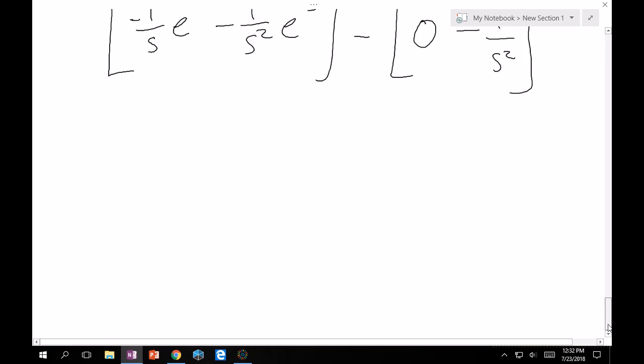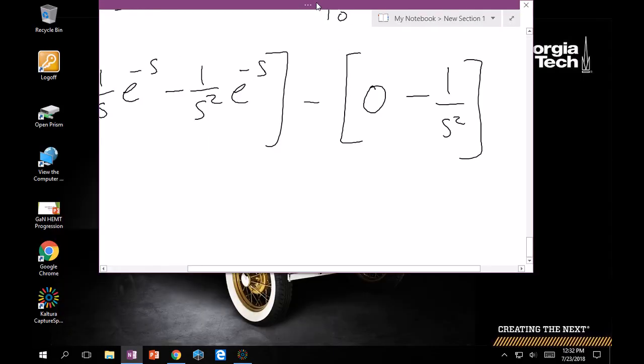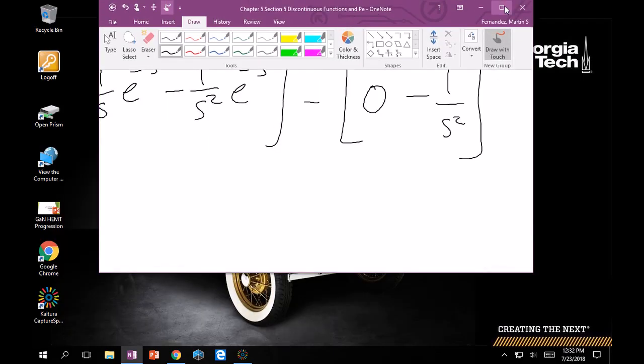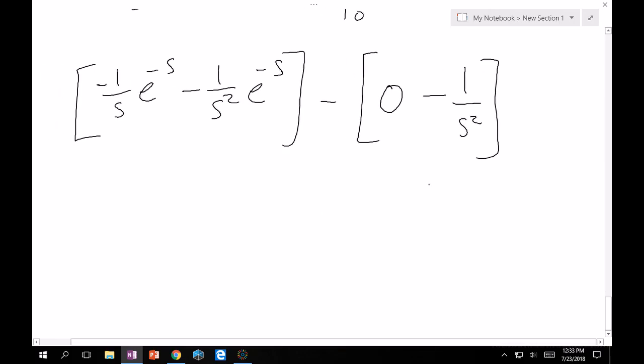Which then means that we, if you simplify this a little bit further. I kind of got shifted a little bit. Simplifying this further, this turns out to be one over s squared minus one over s e to the minus s minus one over s squared e to the minus s. Therefore,